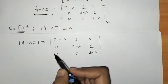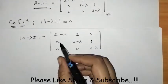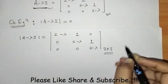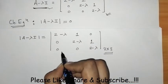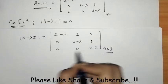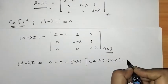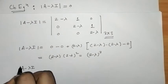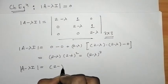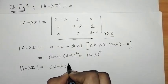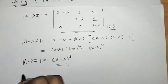We write down the determinant of this matrix and solve it. This is a determinant of order 3 by 3, and we can expand it by any row or column. Here we will expand this determinant by the third row. After solving, the value of this determinant is (2 minus lambda) cubed.